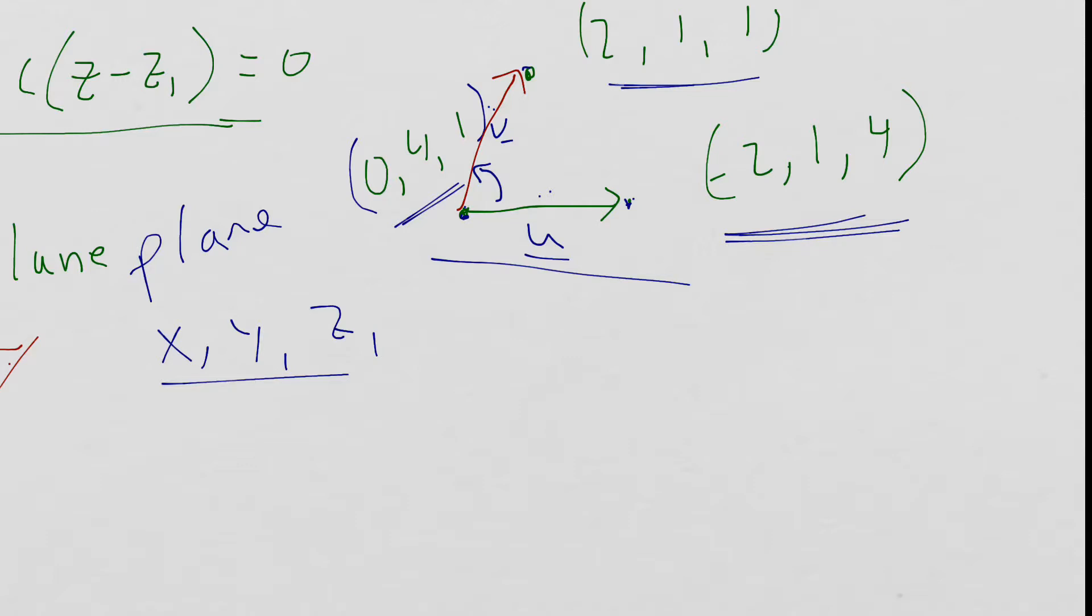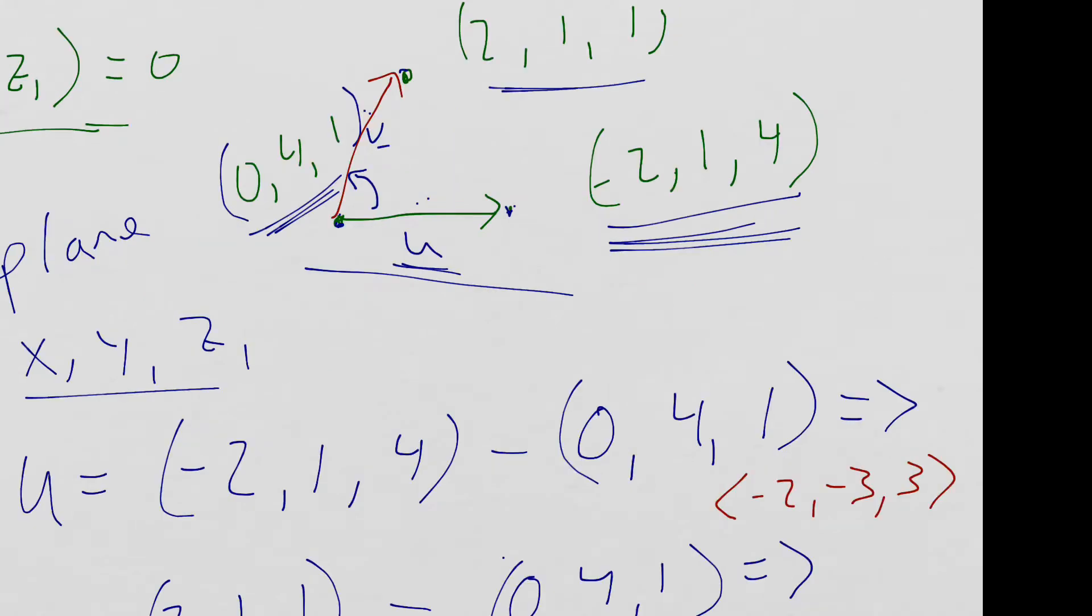So how do we get vector U? Well, this would be the terminal point. This would be the initial point. So I'm going to set the next step up. Okay? Hopefully you can do it on your own. I'm just going to pause this video and set that step up.